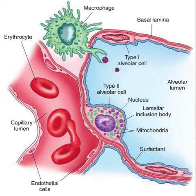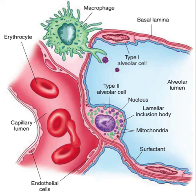Alveolar cells are those cells that make the lining of the alveolar space. Alveoli, singular alveolus, are the air sacs in which gas exchange occurs between the lung and the blood. These alveoli are similar to grapes that are surrounded by a network of capillaries. Here we see the type 1 and type 2 alveolar cells and the other cells in the area, all of which have clinical significance.